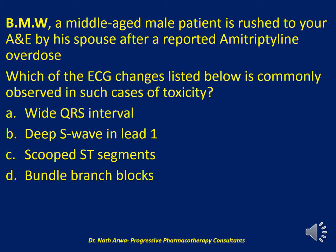The first question reads: Mr. BMW, a middle-aged male patient, is rushed to your accident and emergency department by his spouse after a reported amitriptyline overdose, a tricyclic antidepressant. My question to you is: which of the EKG or ECG changes listed below is commonly observed in such cases of TCA toxicity? Is it wide QRS interval? Is it the deep S wave in lead one? Is it a scooped ST segment? Or is it a bundle branch block? I'll give you 10 seconds to choose the correct answer.